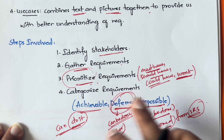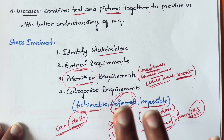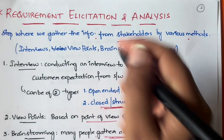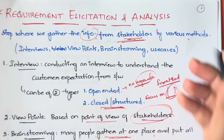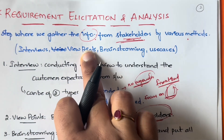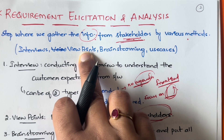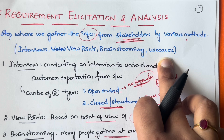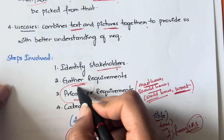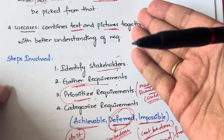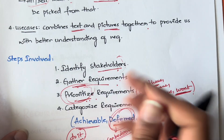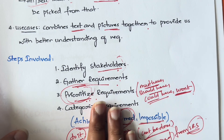So this is about requirement elicitation and analysis. It is the step where you gather information from stakeholders - customers, developers, and others. You use different techniques: interviews, viewpoints, brainstorming sessions, and use cases. The steps involved are: identify stakeholders, gather all requirements using these methods, prioritize those requirements, and then categorize them as achievable, deferred, or impossible.